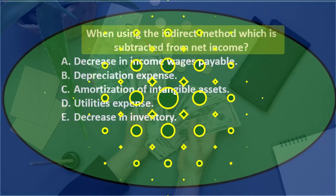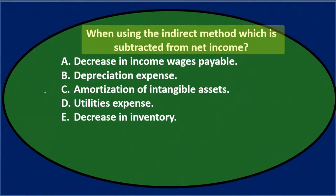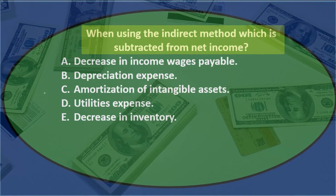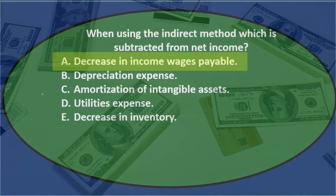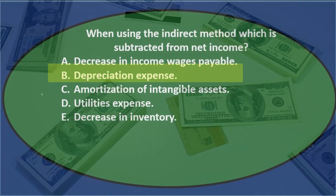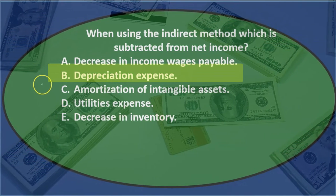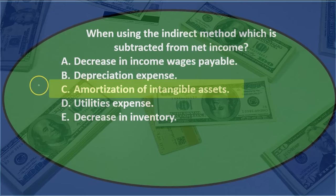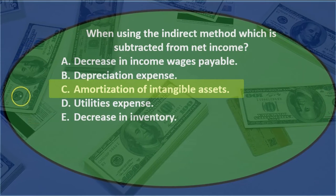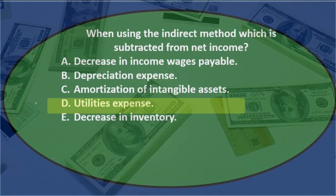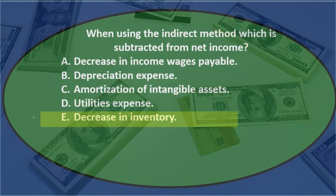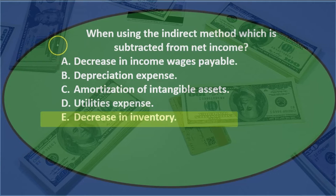Next question: when using the indirect method, which is subtracted from net income? A) decrease in wages payable, B) decrease in depreciation expense, C) amortization of intangible assets, D) utilities expense, E) decrease in inventory.